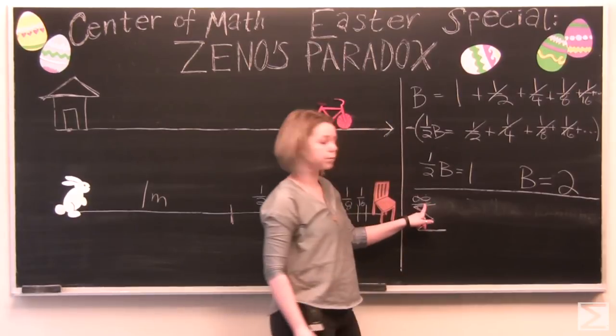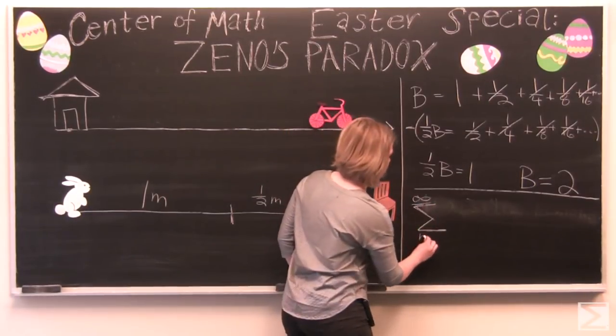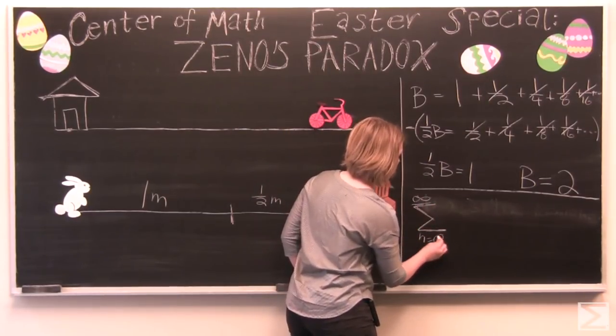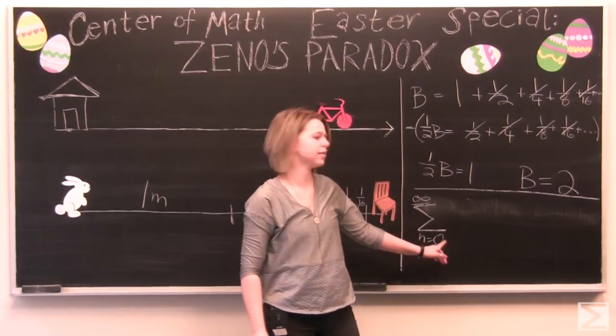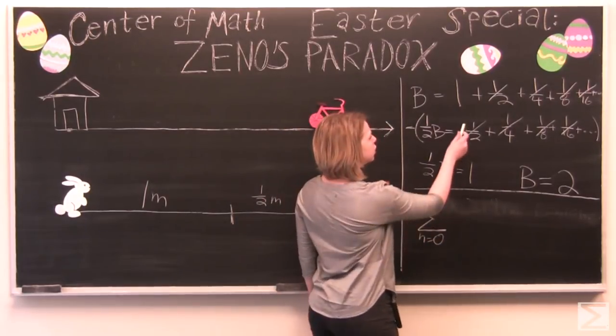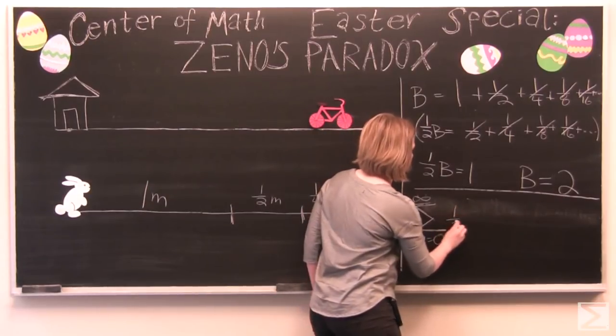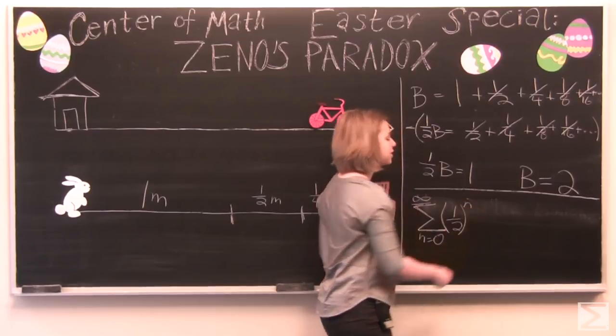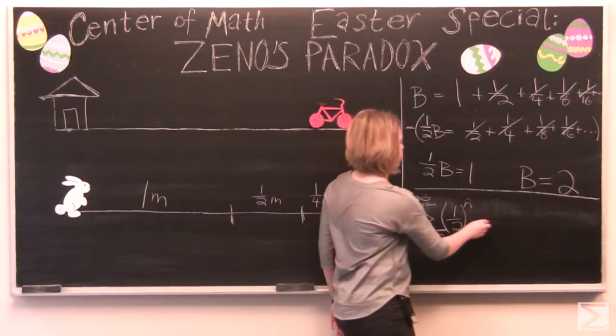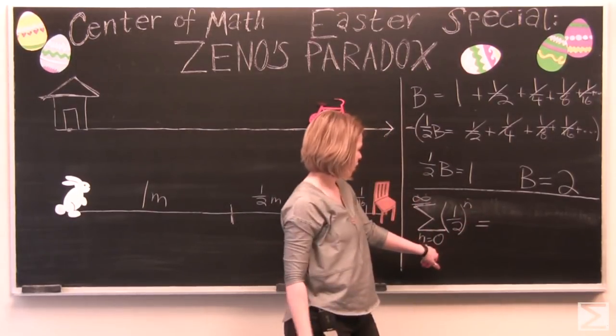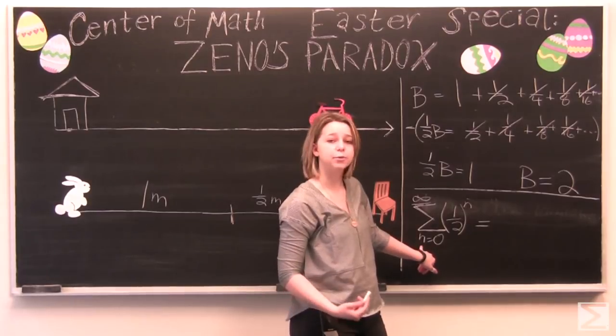So we're going to have an infinite number of terms. And we're going to start where our first term n is equal to zero. That will make more sense in a second. So this equation written in sigma notation is one half quantity to the power of n. So what this means is that our first term is when n equals zero.